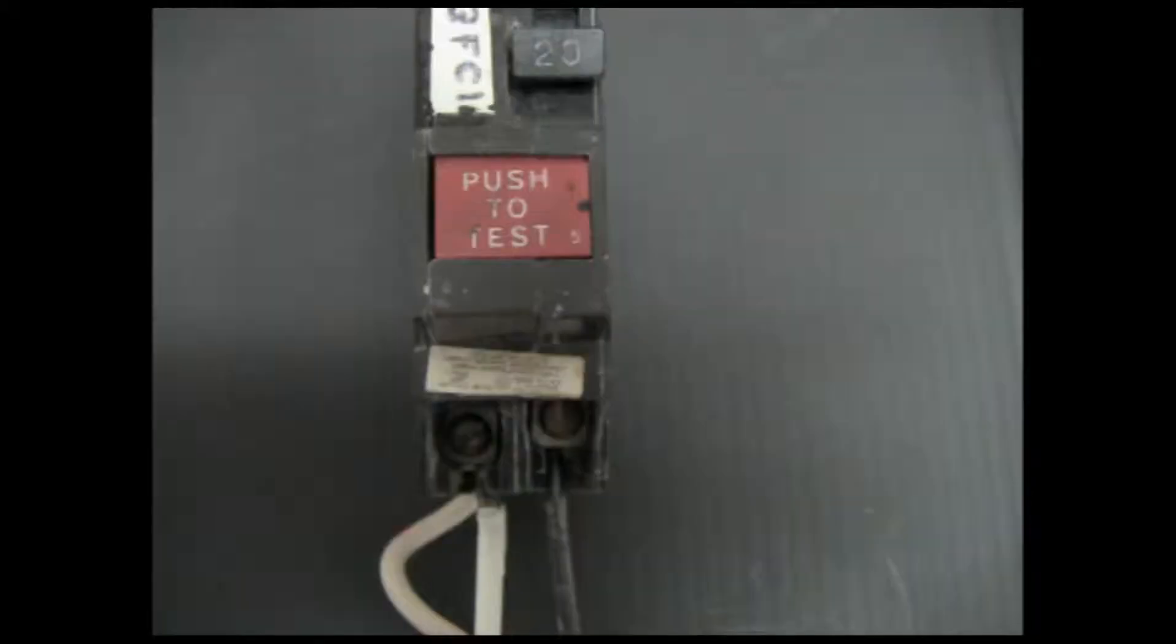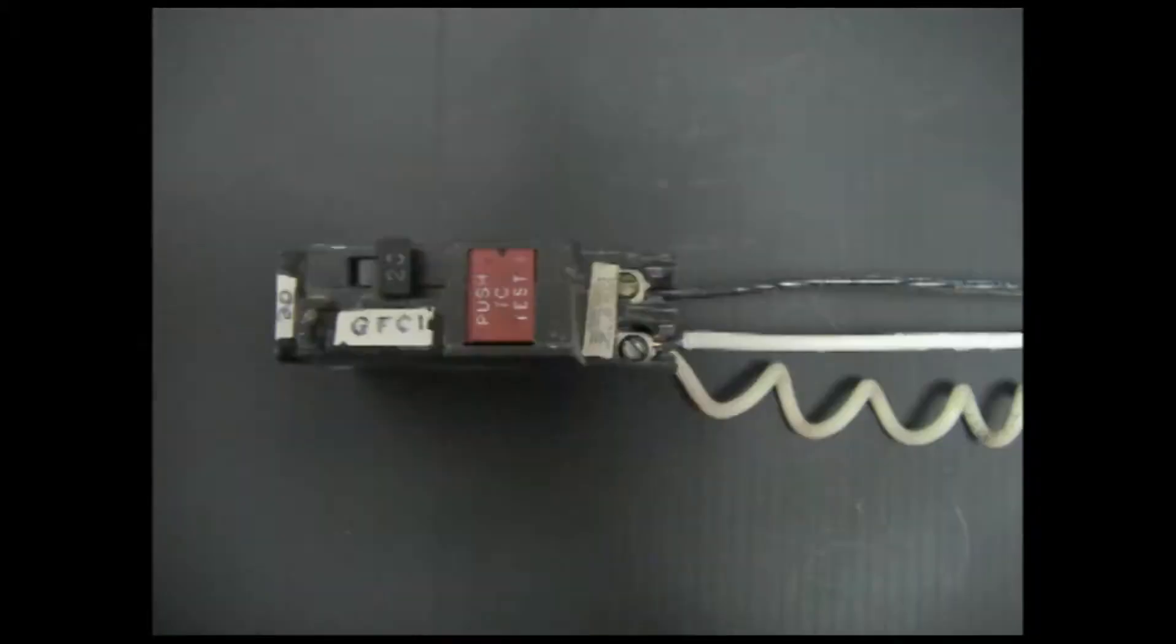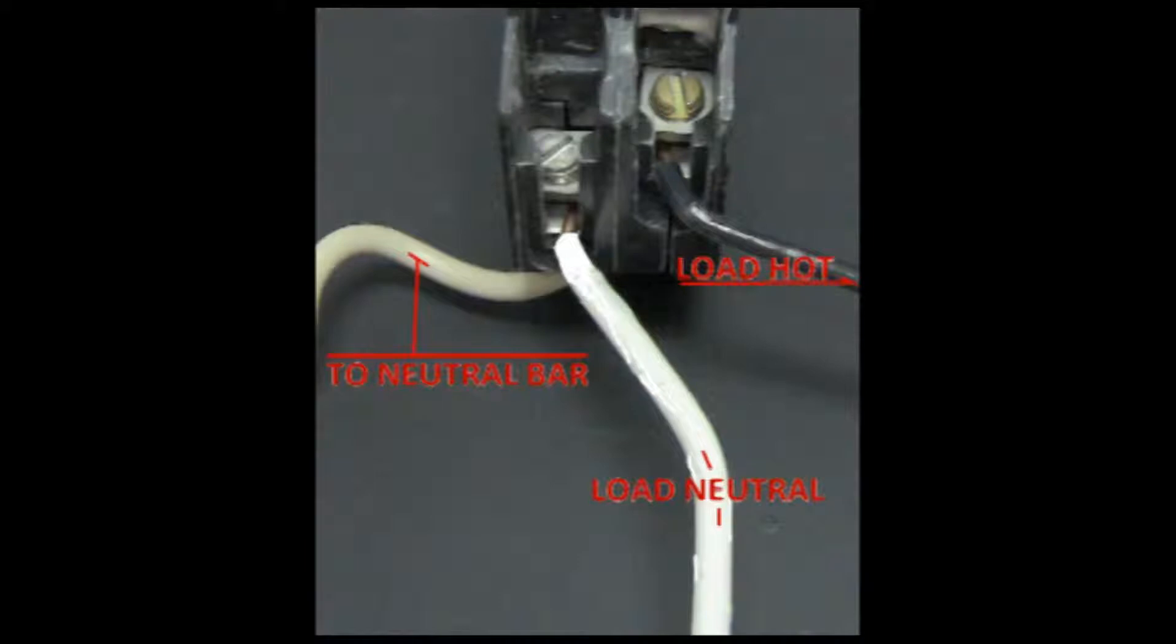An AFCI or arc fault protector will not do this. As you can see, the printing on the breaker is GFCI, which stands for Ground Fault Circuit Interrupter. To work properly, the wire that feeds the circuit is locked into a load lug.